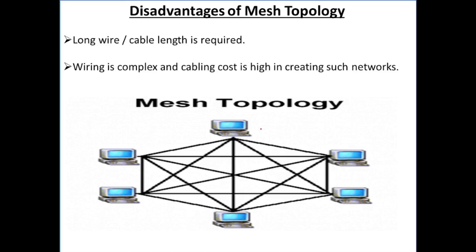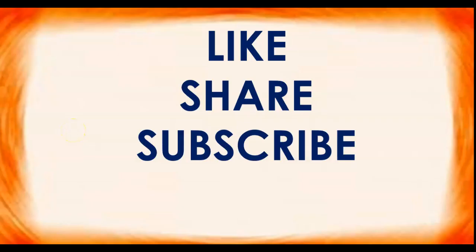Next we have disadvantages of mesh topology. Long wire cable length is required — there is a large cable requirement because there is point-to-point link between all nodes, so cabling requirement is very large. Wiring is complex because one node has to connect with everyone. The cabling cost is high in creating such networks due to the large amount of cable used. If you like my video, please like it, share it, and subscribe to my channel. Thank you.